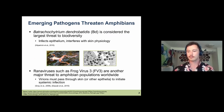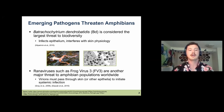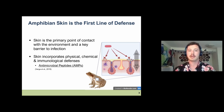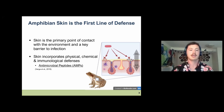As most of you are familiar, there are a number of emerging pathogens currently threatening amphibians, and in particular frog species. Two key pathogens are Batrachochytrium dendrobatidis, or Bd, and ranaviruses such as frog virus 3. Despite their many differences, both either infect or pass through epithelia to initiate systemic infections. As these pathogens are often present in the aquatic environment and trying to enter amphibians, they need to pass through the skin, which is the primary point of contact with the external environment and one of the main barriers to infection. Frogs incorporate physical, chemical, and immunological defenses, including antimicrobial peptides.